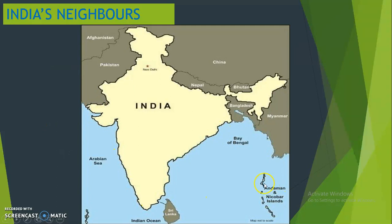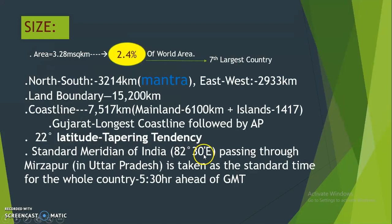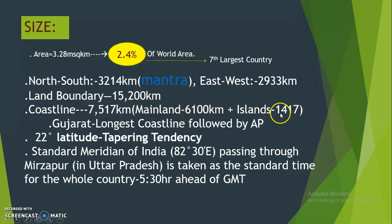India's total coastline is 7,517 km. The mainland coastline is 6,100 km, and the island coastline is 1,417 km. Gujarat has the longest coastline, followed by Andhra Pradesh.